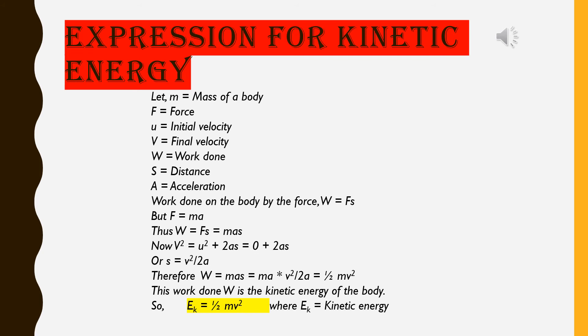Now, from the force and motion equation, V square is equal to U square plus 2AS. Here, initial velocity is 0. That's why 0 plus 2AS. That means S is equal to V square by 2A. Therefore, W is equal to M into A into S, or equal to M into A. Instead of S, we can put the value that is V square by 2A. So, ultimately, it is coming 1 by 2 MV square.